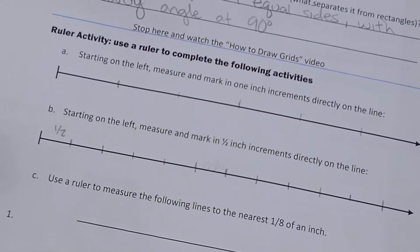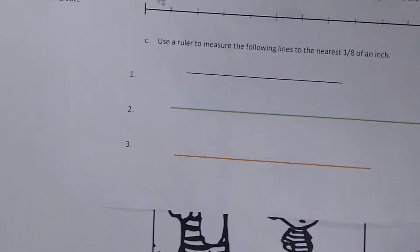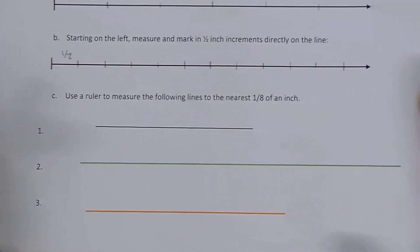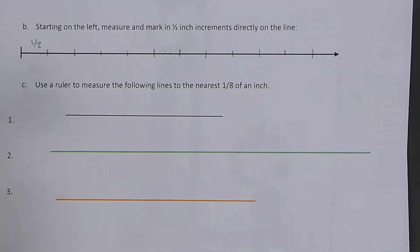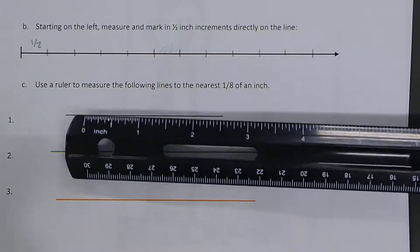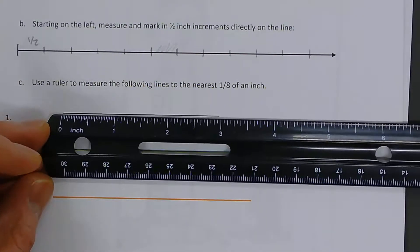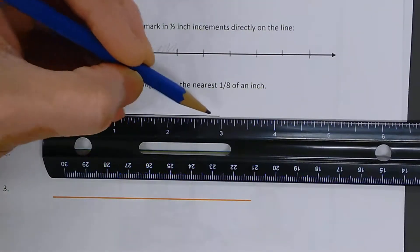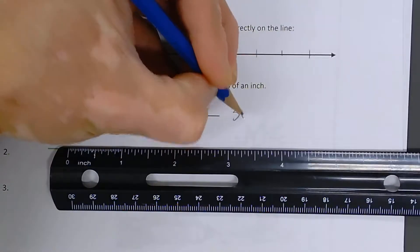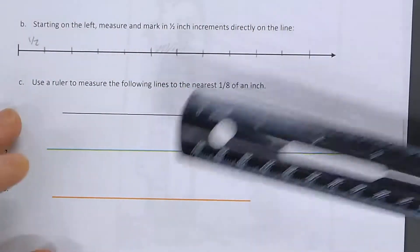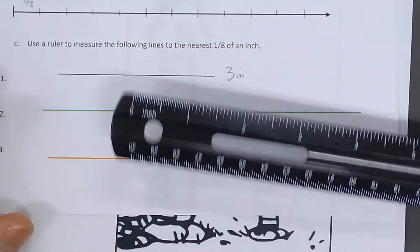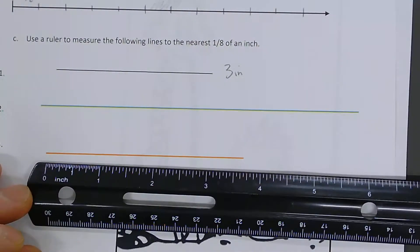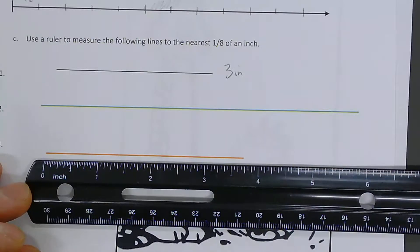Activity C. Let me back up a little bit so you can see this. Activity C says use a ruler to measure the following lines to the nearest one-eighth of an inch. I'm going to put the ruler down like this, and that's about one, two, just about three inches. So I'm going to write down three inches right there. Make sure that you're doing this on your own. I'm going to do that one for you, but then the next one you have to do on your own, and then the last one you have to do on your own as well.